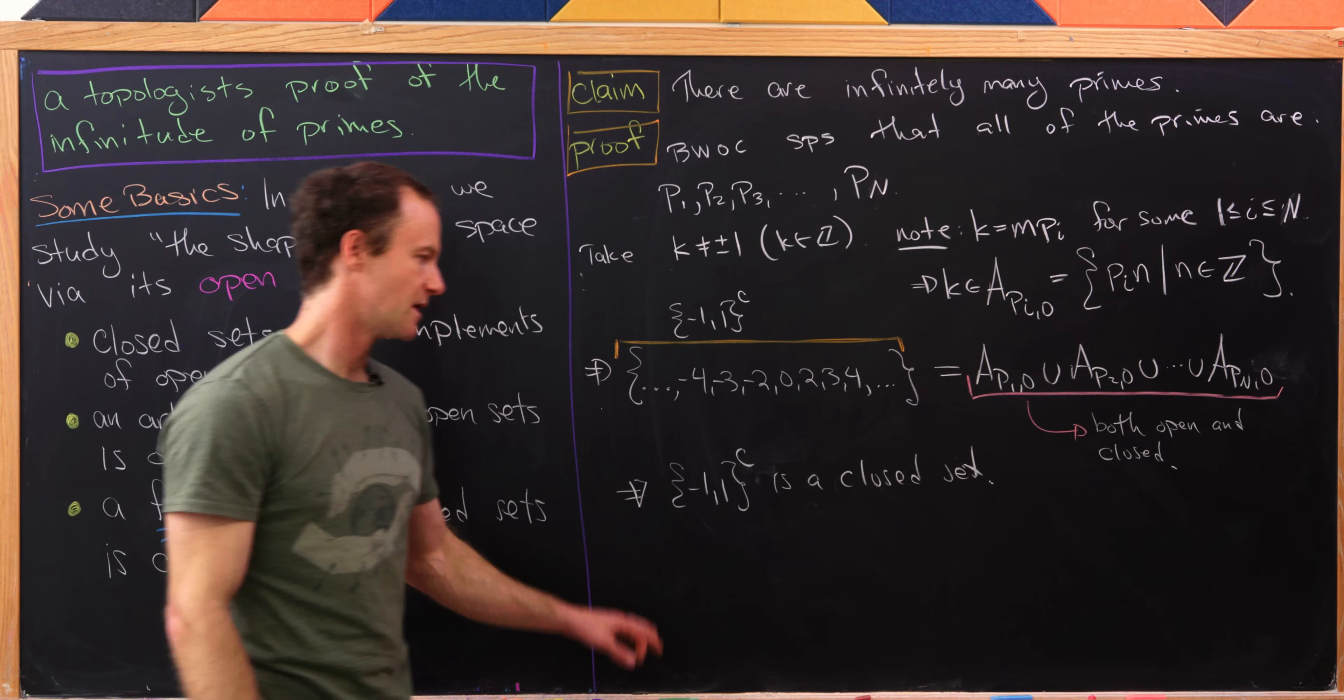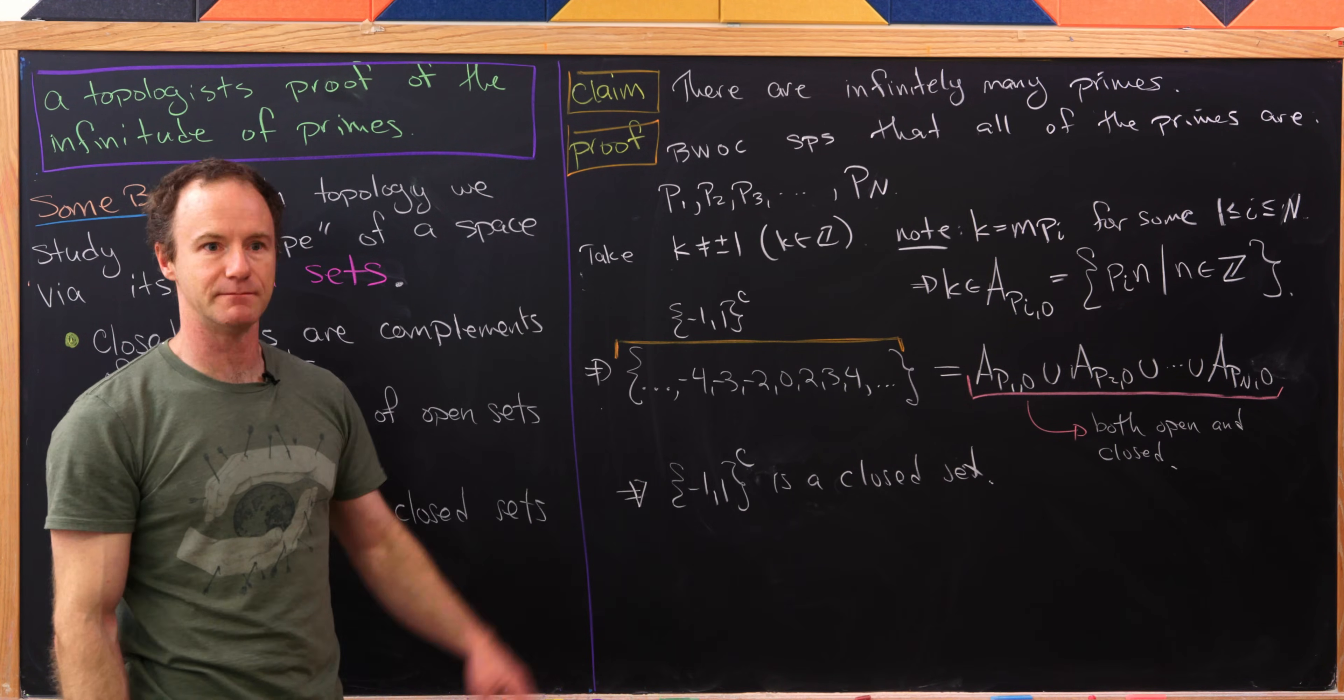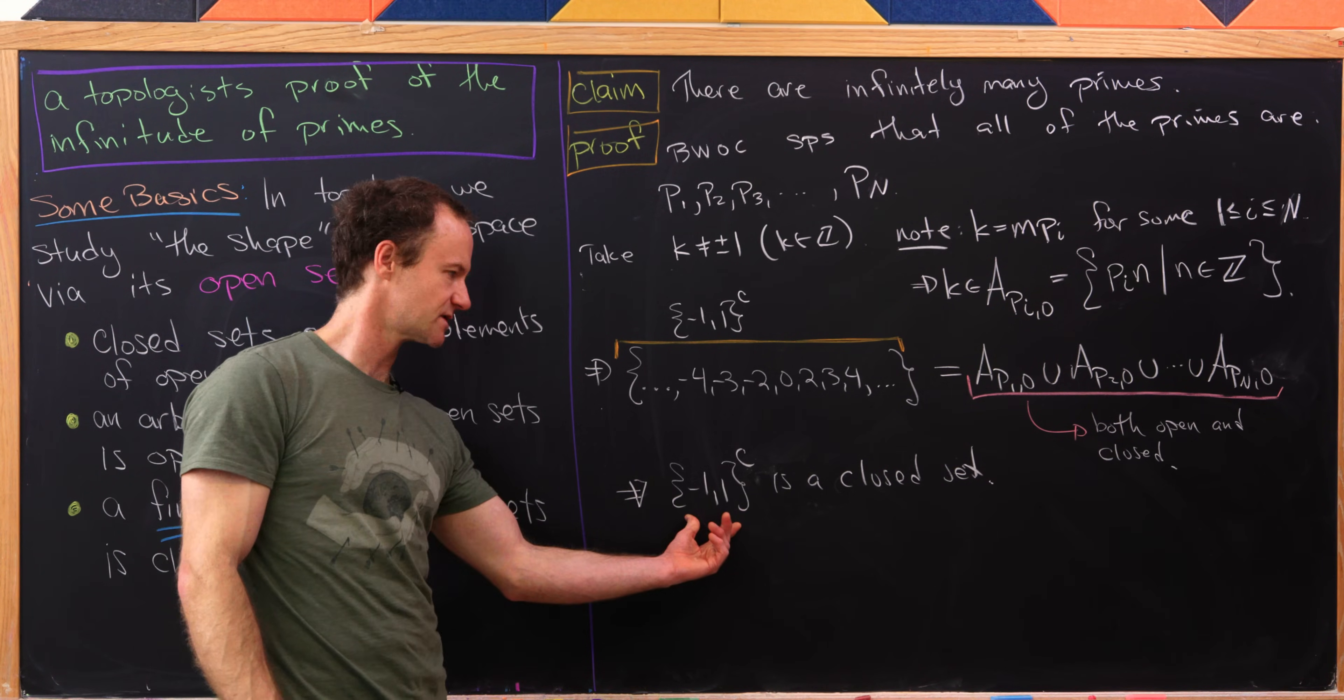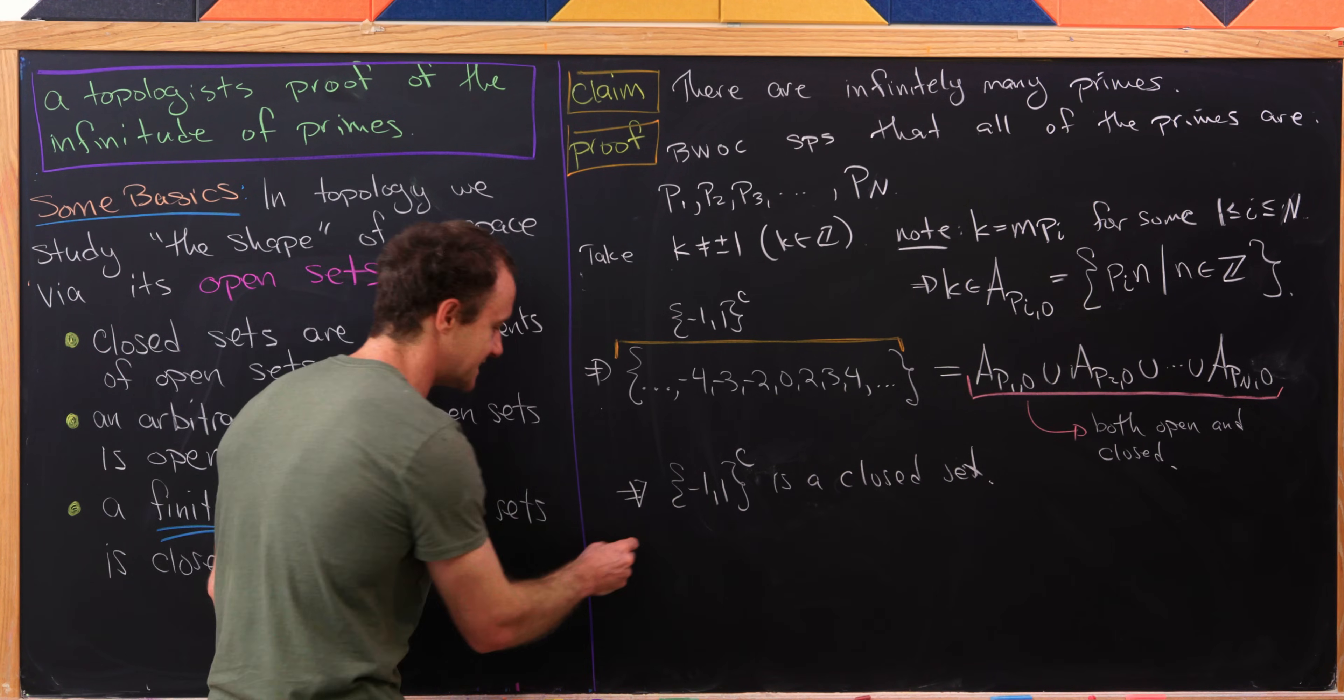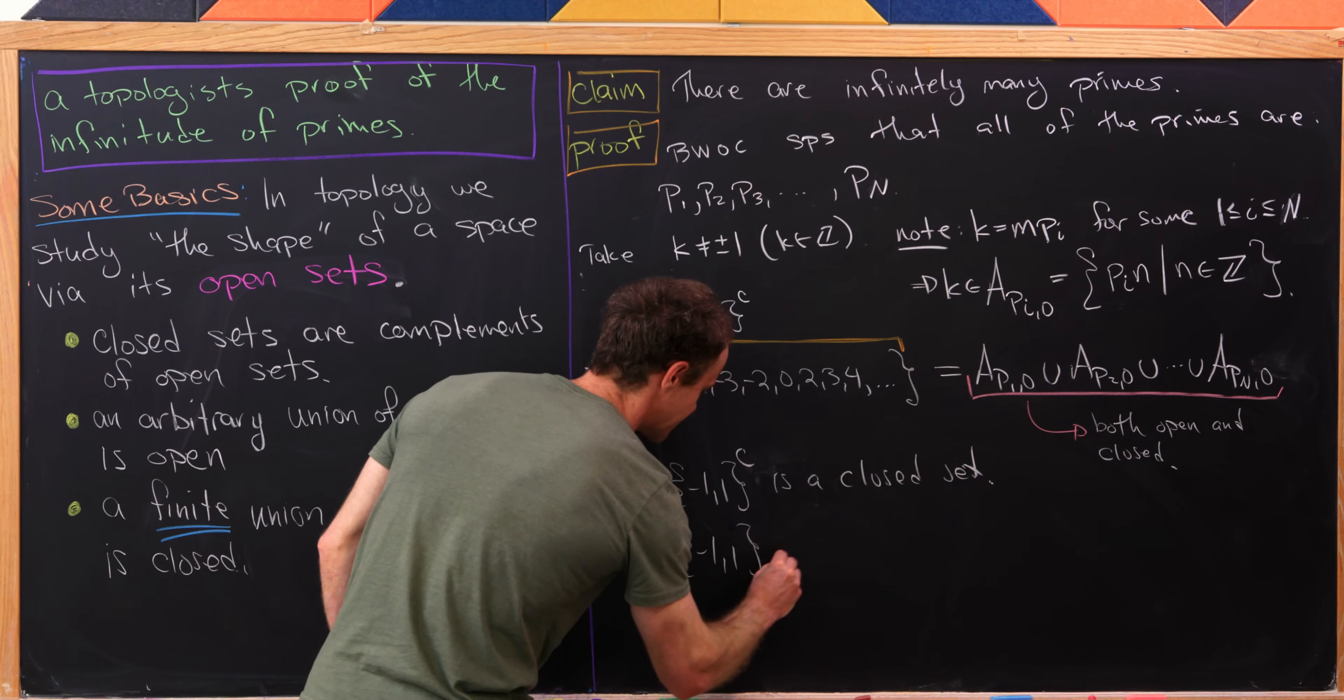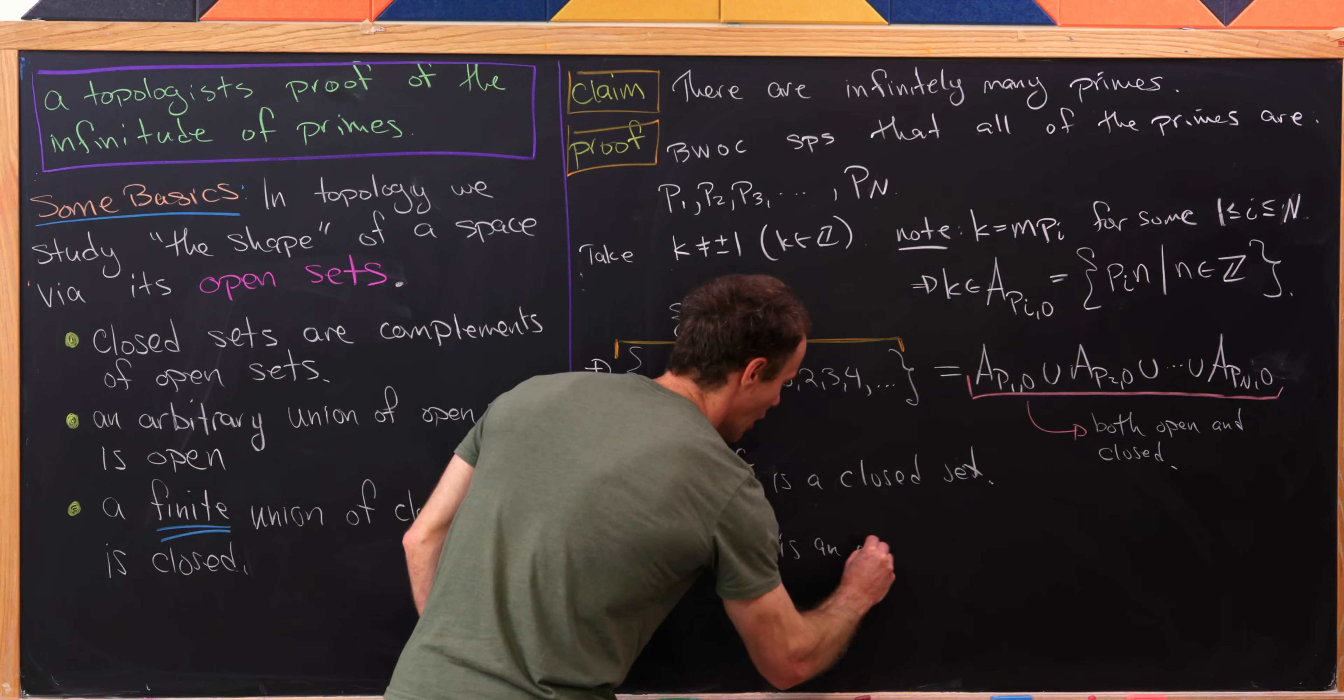Okay. But in particular, we want it to be closed. So that means the set containing minus one to one complement is a closed set. Okay. But being a closed set means that you're a complement of an open set. But if we take the complement of this, it just goes away. And we see that in fact, this doubleton containing minus one and one is an open set.